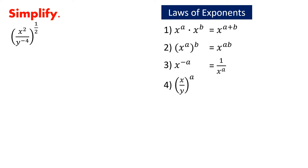If we have a fraction to a power — say the quantity x over y to the power a, where x and y are generic bases, y not equal to 0, and a is an exponent — then we take the numerator and the denominator each to that power. Let us keep these in mind and go over our example.